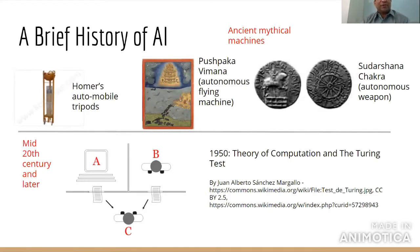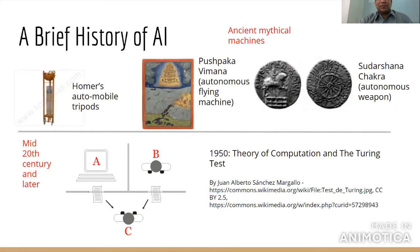Let us briefly acknowledge some pre-20th century elements that have inspired AI. The idea of intelligent machines has always been there in humanity. I've given some examples from Western writings and Indian writings as well, where the idea of machines acting autonomously and intelligently has always captured human imagination. But let us start our story of AI from the mid-20th century with Alan Turing.